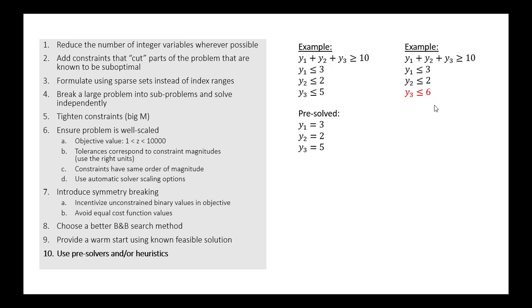So here, the pre-solve version has to account for the fact that y3 can be, say, 5 or 6, y2 could be 1 or 2, y1 could be 2 or 3.